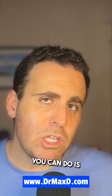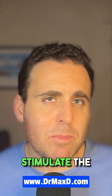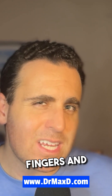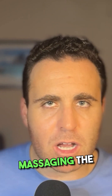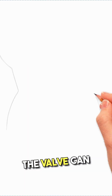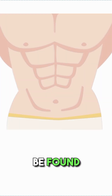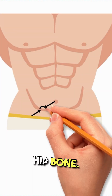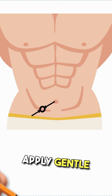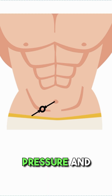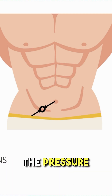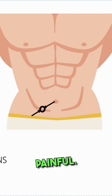One thing you can do is regularly stimulate the ileocecal valve by taking your fingers and deeply massaging the abdomen where it is located. This will help regulate its function. The valve can be found halfway between the belly button and the right hip bone. Using your fingertips, apply gentle pressure and make small circular motions. The pressure should be firm, but not painful.